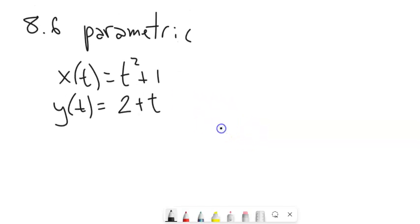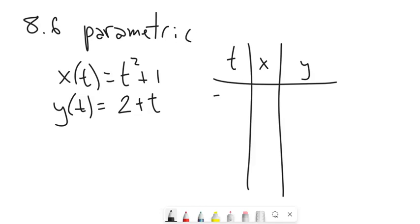Now thinking about how this works, I could do a table that would help me think about it. Notice I have three variables: t, x, and y. Then I'd run these through some values, like let's go negative 3, negative 2, negative 1, 0, 1, 2, 3, just to get a sense of what's going on.